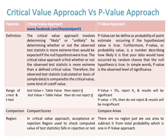The critical value is some kind of cut-off value. The p-value can be defined as the probability of a point estimate occurring if the hypothesized value is true. Furthermore, the p-value, or probability value, is a number describing how likely it is that your data would have occurred by random chance given that the null hypothesis is true. In simple words, p-value is the observed level of significance.